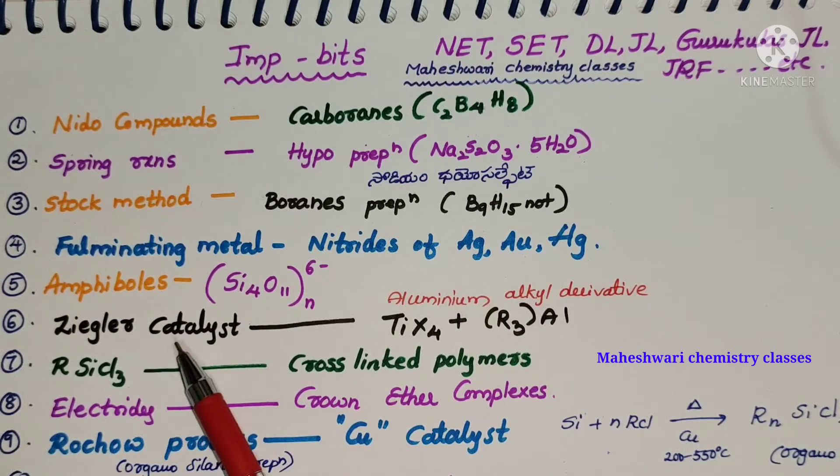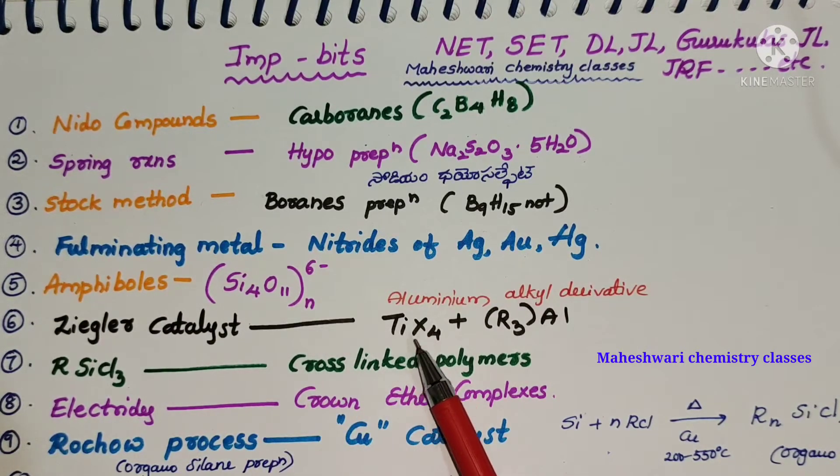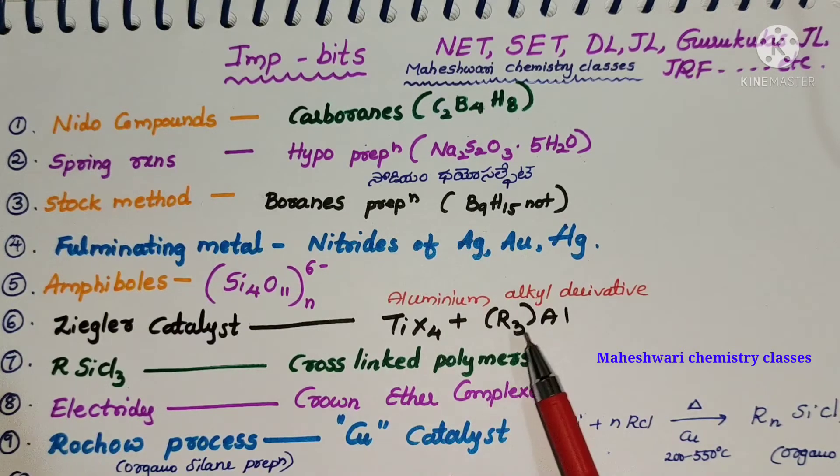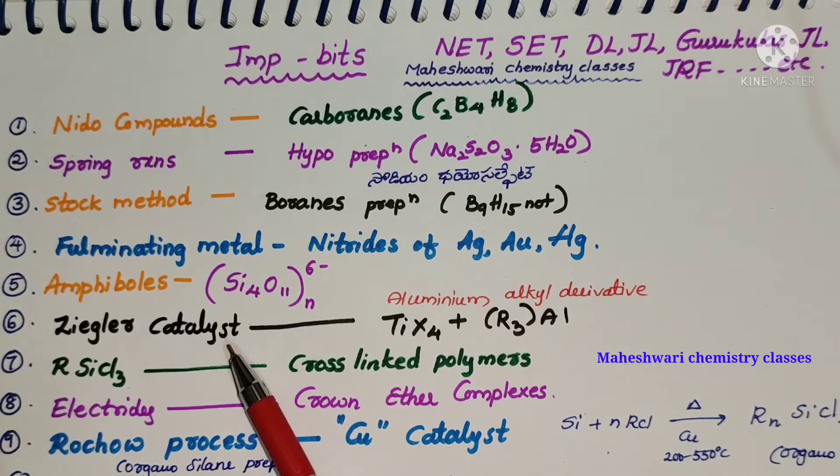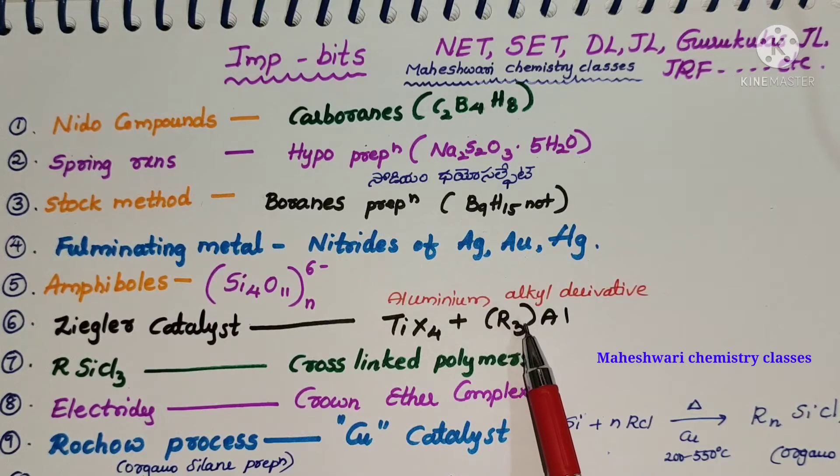Ziegler catalyst or Ziegler Natta reagent is titanium tetrahalide plus trialkyl aluminum mixture. Ziegler Natta catalyst especially in polymer preparation, so you can use it for many uses.